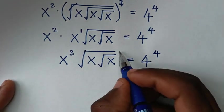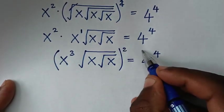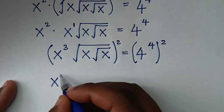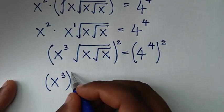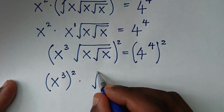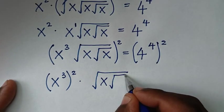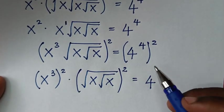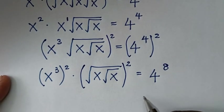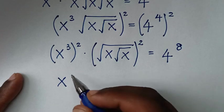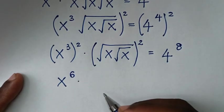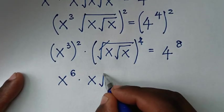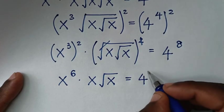In the next step, we'll remove this square root here, so we'll square again on both sides. We'll take this square inside the bracket, so it will be x to the power of 3, bracket squared, times square root of x under square root of x, bracket squared, is equal to 4 to the power of 8. It will be x to the power of 3 times 2, which is power of 6. This square root will cancel with this square, so it will be times x times square root of x is equal to 4 to the power of 8.